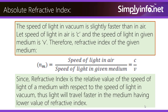The speed of light in vacuum is slightly faster than in air. Let the speed of light in air be C and the speed of light in the given medium be V. Therefore, the refractive index of the given medium is equal to the speed of light in air divided by the speed of light in the given medium, which is equal to C / V. Hence, refractive index is the relative value of the speed of light of a medium with respect to the speed of light in vacuum. Thus, light will travel faster in the medium having a lower value of refractive index.